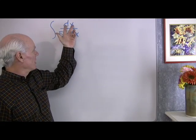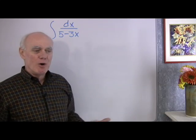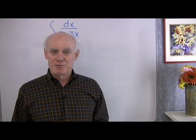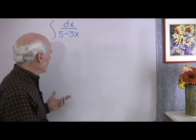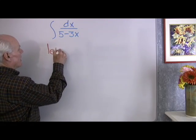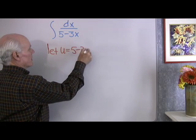Okay, to me this looks like maybe du over u, something like that. I have something over u. 1 over u I know I can find the anti-derivative of because I'll just use my natural log function. So let's try that as a start. Let's let u be equal to 5 minus 3x.